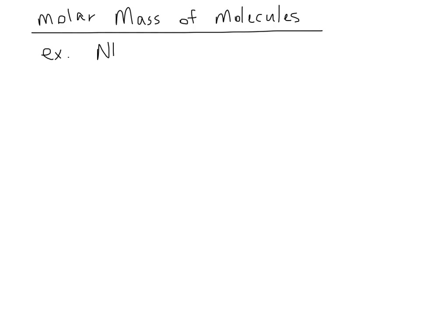For example, let's start with NH3. NH3 contains 1 N and 3 H's. We get that from the subscripts — remember the invisible ones in chemistry, so there's an invisible 1 there. So let's figure out individually what the molar mass of nitrogen is and what the molar mass of hydrogen is. You'll go to your periodic table and find nitrogen. One nitrogen is 14.01 grams per mole.